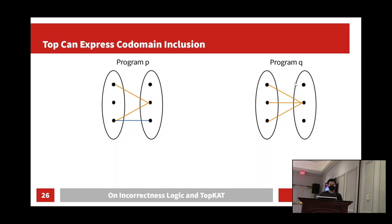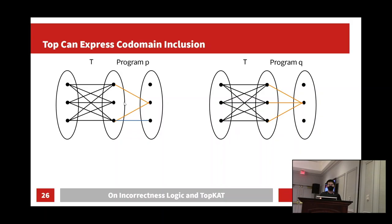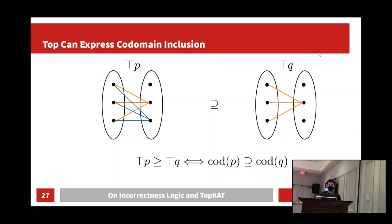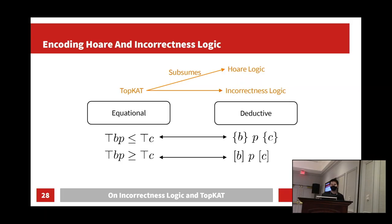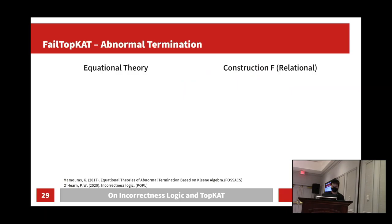For example, even if P's codomain is larger than Q's codomain, P may not be strictly larger than Q as a relation. However, when we pre-compose with top, if top·P is larger than top·Q then the codomain of P includes the codomain of Q. With this realization and the codomain-based definitions of Hoare and incorrectness logic, we were able to encode both logics in TOP-CAT — not just incorrectness logic. We also showed that the equational theory of TOP-CAT subsumes all the proof rules of both Hoare logic and incorrectness logic.